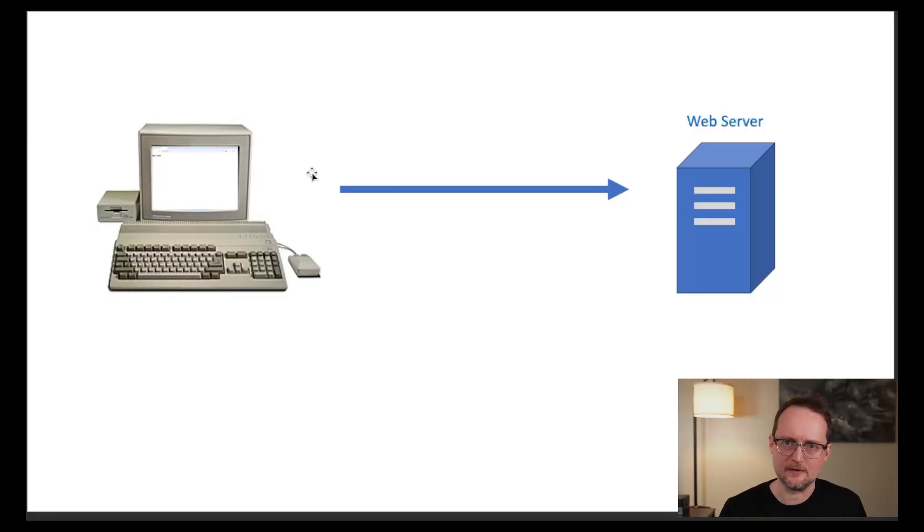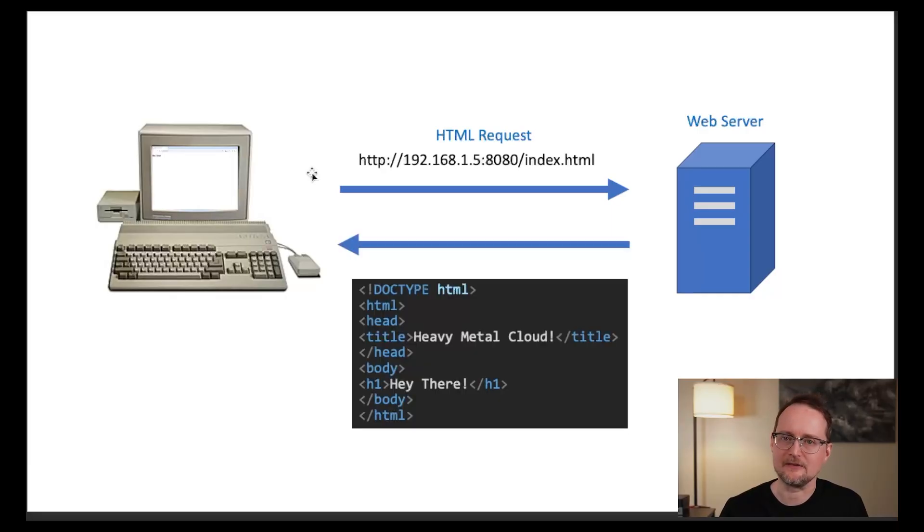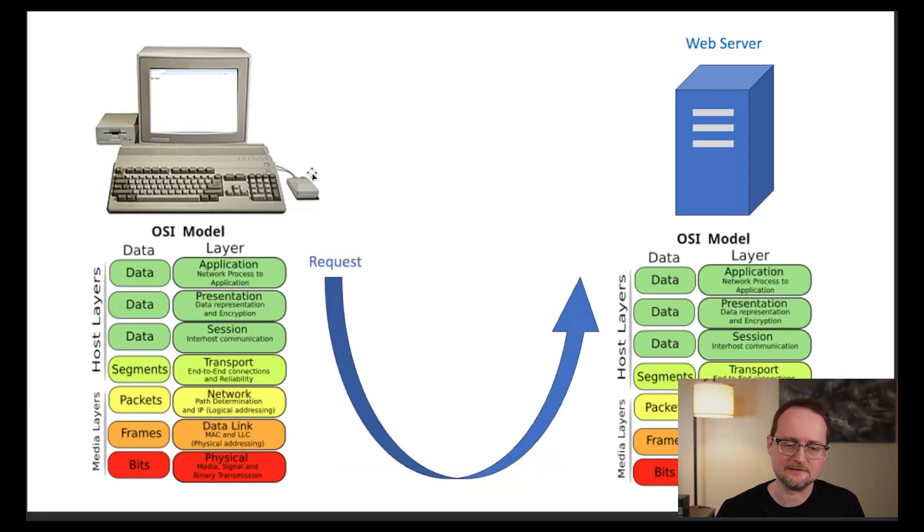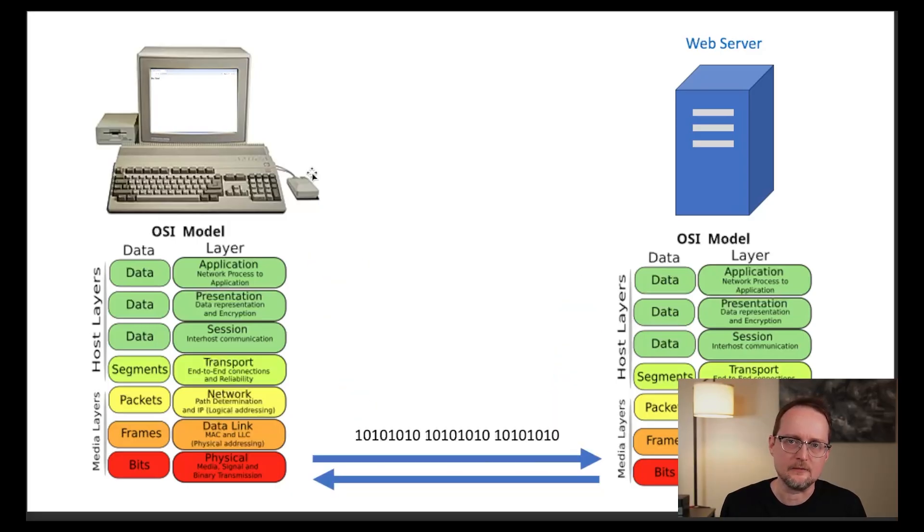Let's say you're on your computer and you want to bring up a web page. First you'll make a request to the web server and what you'll get back is HTML that looks something like this. Okay, that seems simple enough, but how does this communication actually work? What you'll find in computer science is that most complicated problems are broken up into layers. The abstraction layers for networking use something called the OSI model.